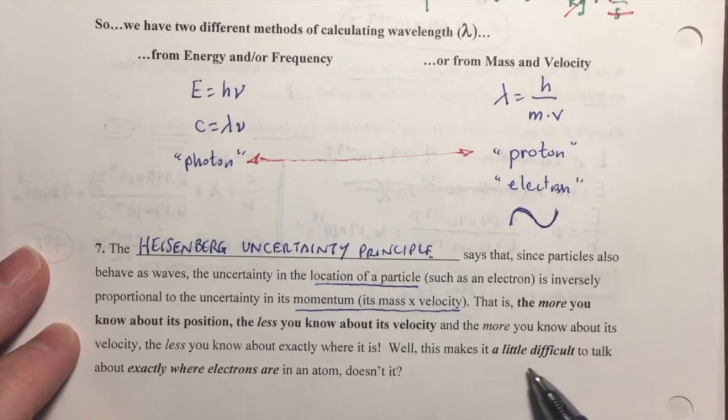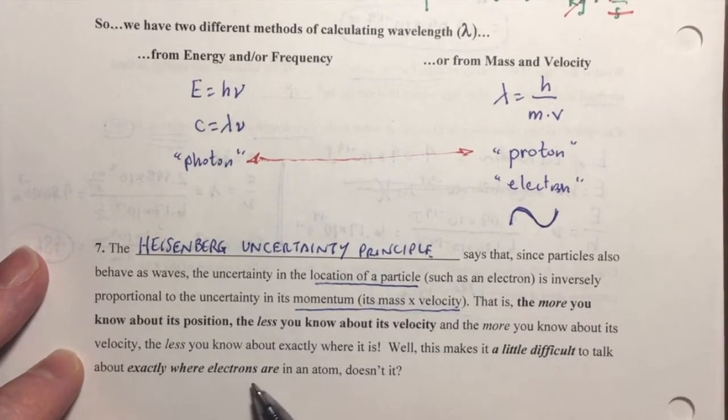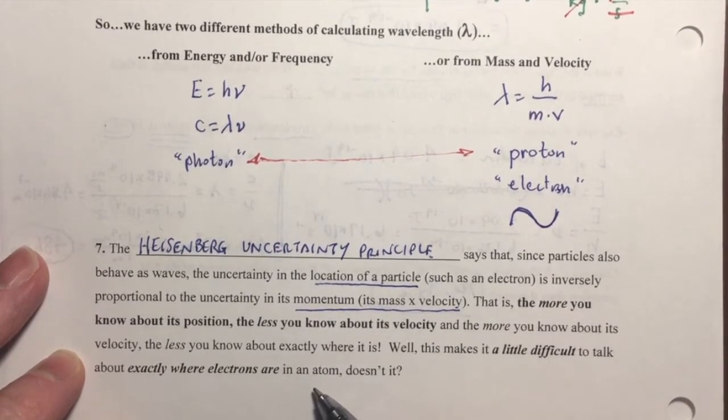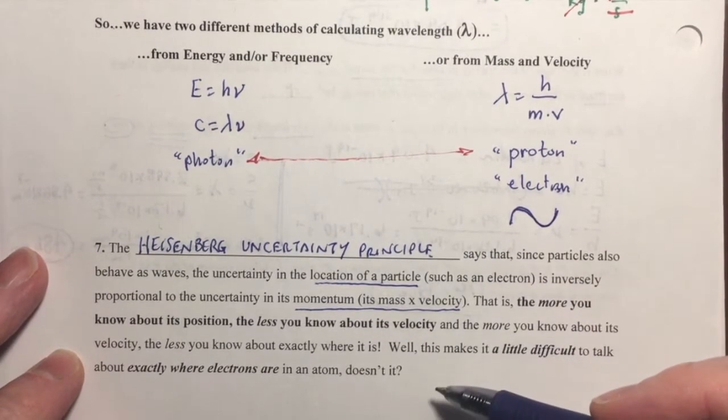Well, this makes it kind of difficult to talk about exactly where electrons are in an atom, and how fast they're traveling, which direction they're going, and so forth, at a specific moment in time. So, that's the Heisenberg uncertainty principle.